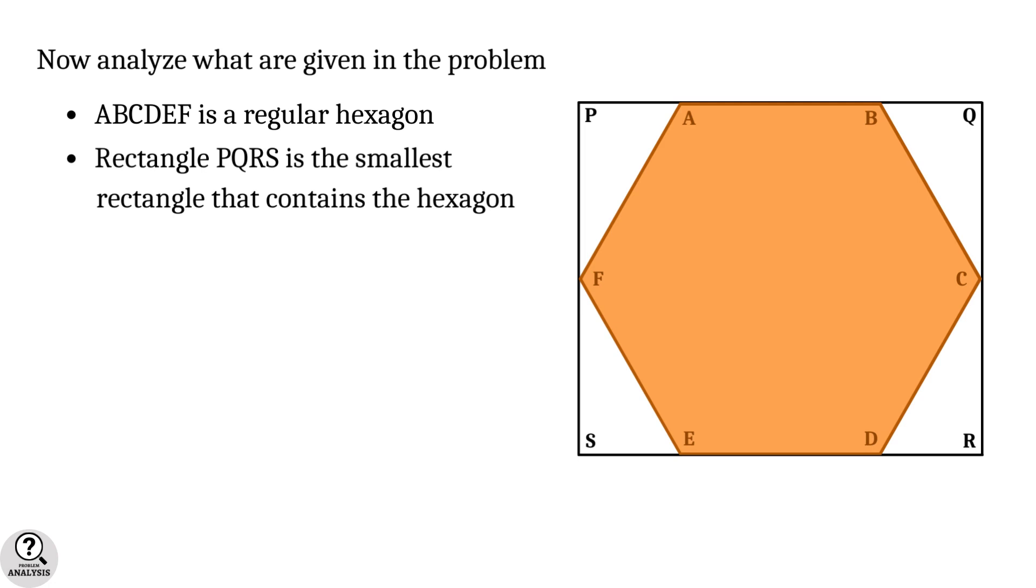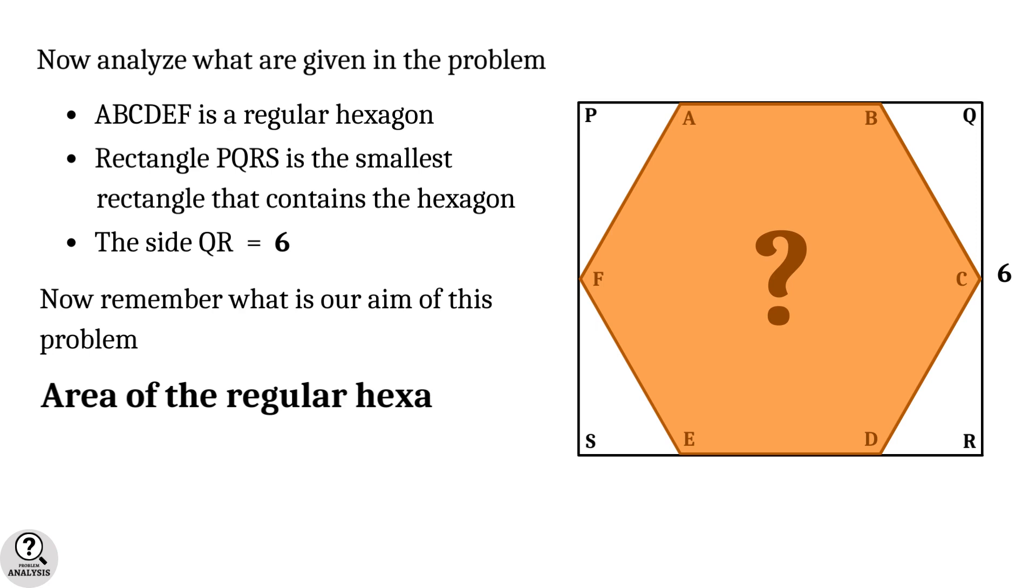Finally, the side QR equals six units. Now what exactly is our aim of this problem? It is nothing but to find the area of the regular hexagon. This is the structure of our problem, so always keep in mind.